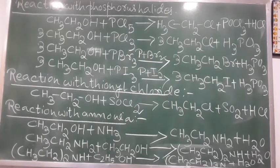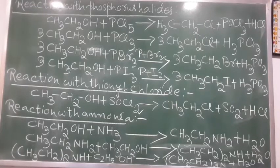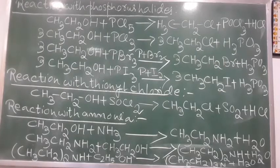Next, reaction with ammonia. When vapours of an alcohol and ammonia are passed over heated alumina (Al₂O₃) at 633 Kelvin, a mixture of primary, secondary, and tertiary amines is produced. For example: CH₃CH₂OH + NH₃ gives CH₃CH₂NH₂ + H₂O. CH₃CH₂NH₂ + CH₃CH₂OH gives (CH₃CH₂)₂NH + H₂O. Please copy down these reactions.